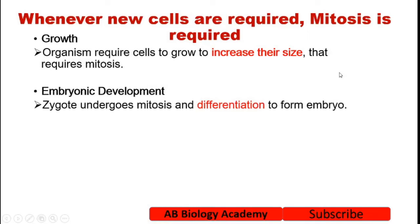Embryonic development: the zygote undergoes mitosis and differentiation to form an embryo. After the zygote is formed, a series of mitotic divisions takes place, and gradually the zygote transforms into an embryo, and finally an adult is formed because of the mitosis and differentiation process.